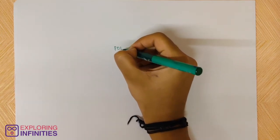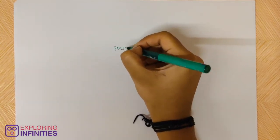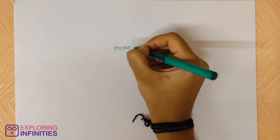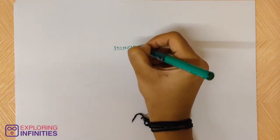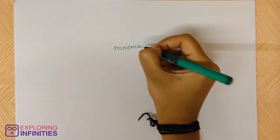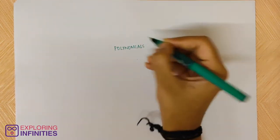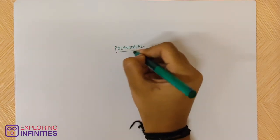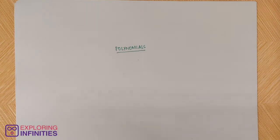The name of our chapter is Polynomials. It seems like a very complicated name at first, but no need to worry about it. It's a very simple chapter and I'll explain it to you in a way that you'll easily understand.